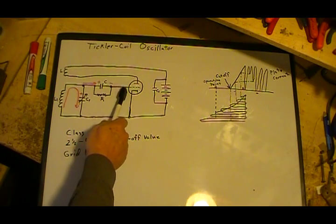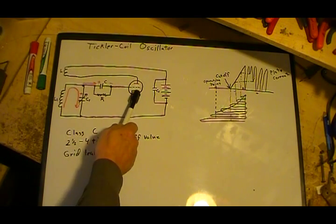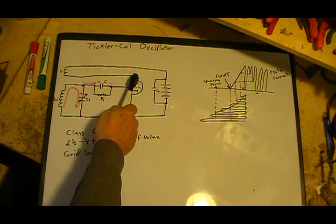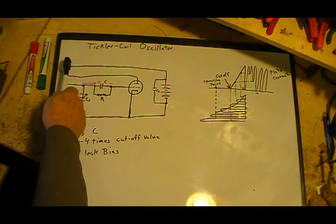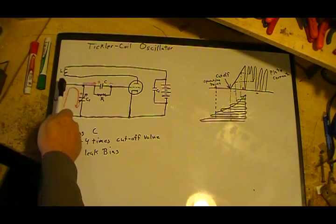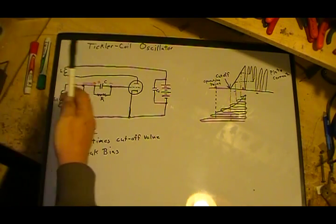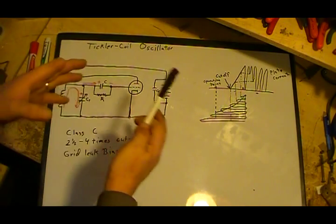As that current flows, the grid is actually, until this capacitor charges up, the grid is positive. So we get more and more current flowing through the tube through L here, the feedback coil.